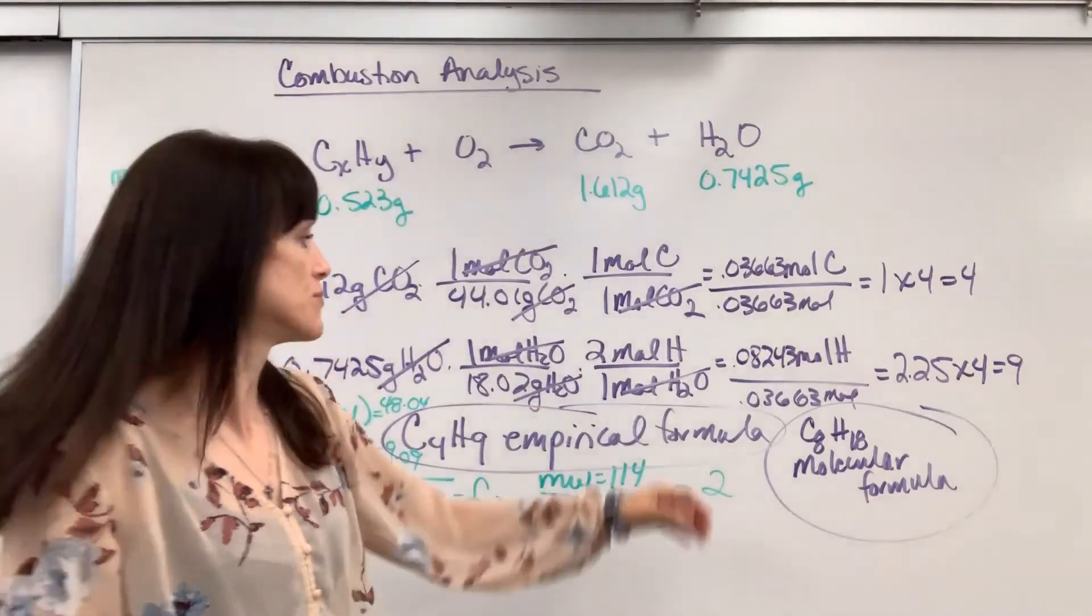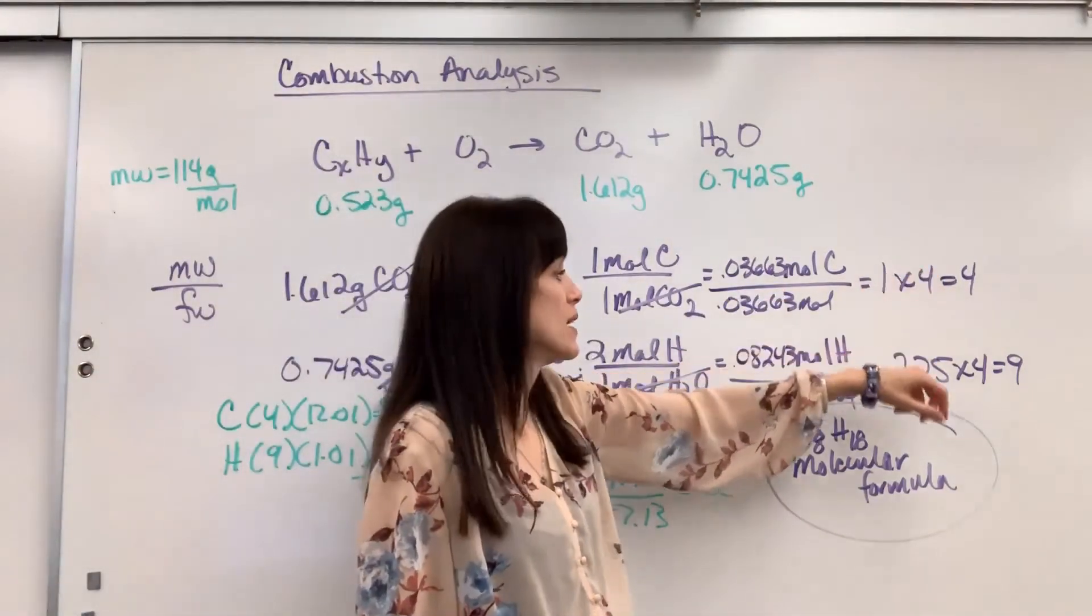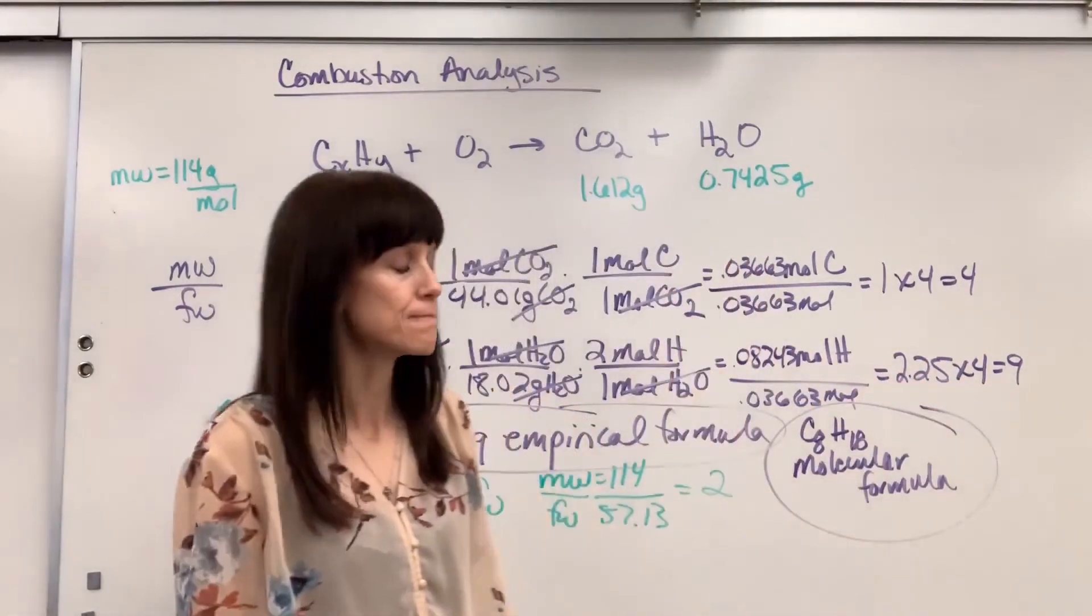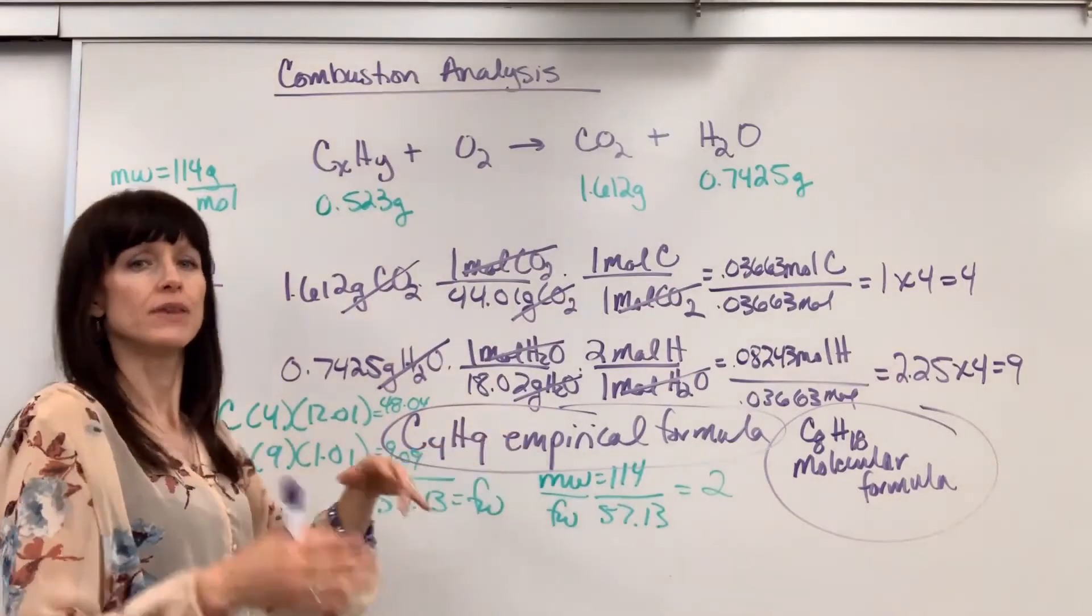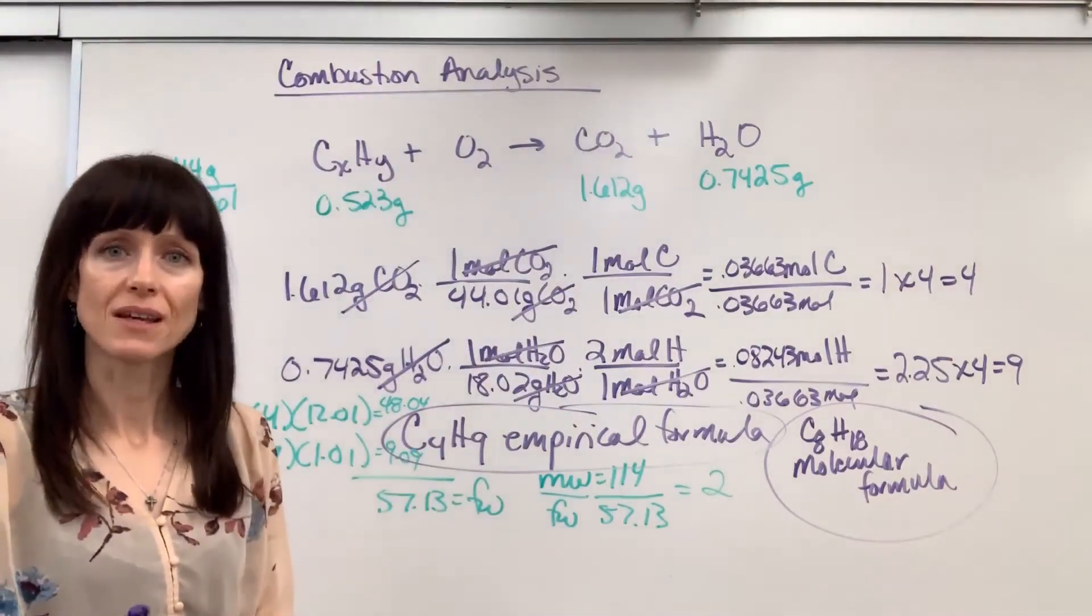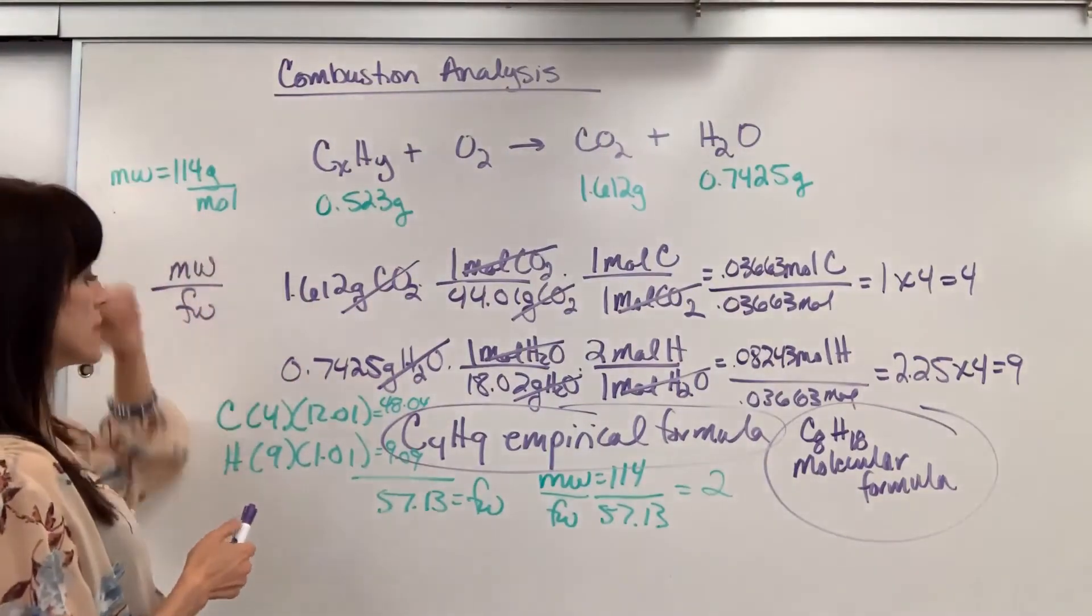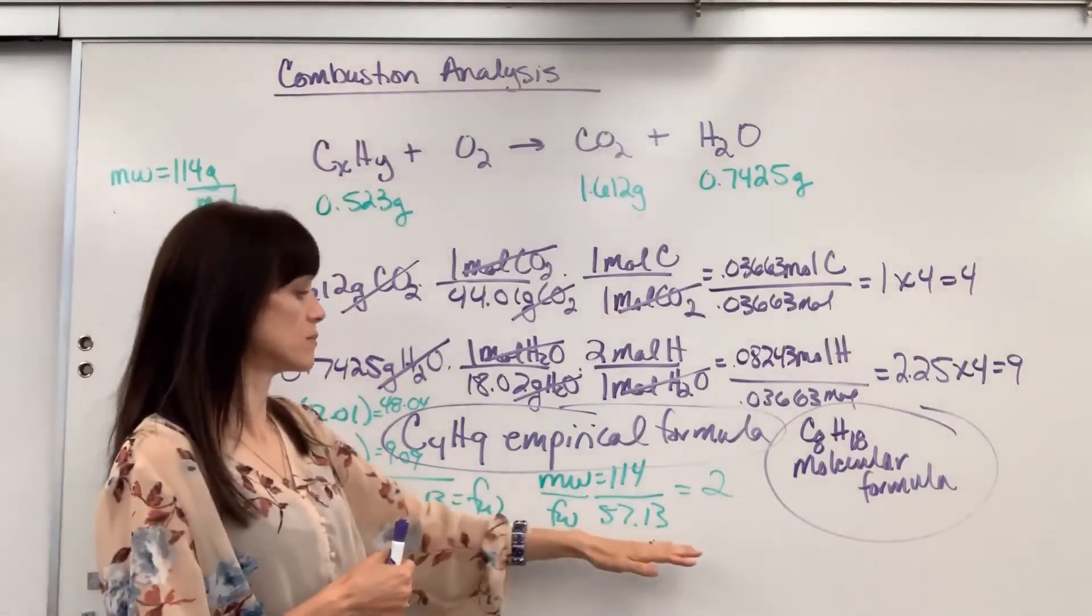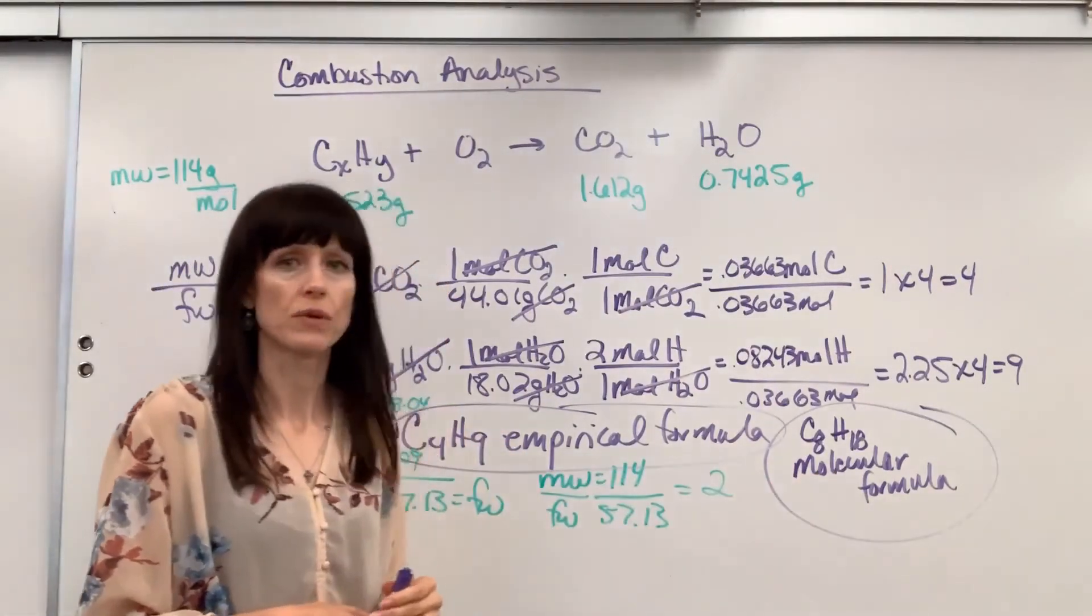Then you just clean it up. Divide by the smallest mole to get your smallest whole number. If you need to multiply by a factor to bring it to a whole number, great. That will give you the empirical formula. They'll always give you the molar mass or the molecular weight of the molecular formula. Simply take that and divide it by the molar mass of your empirical formula. That will give you the molecular formula.